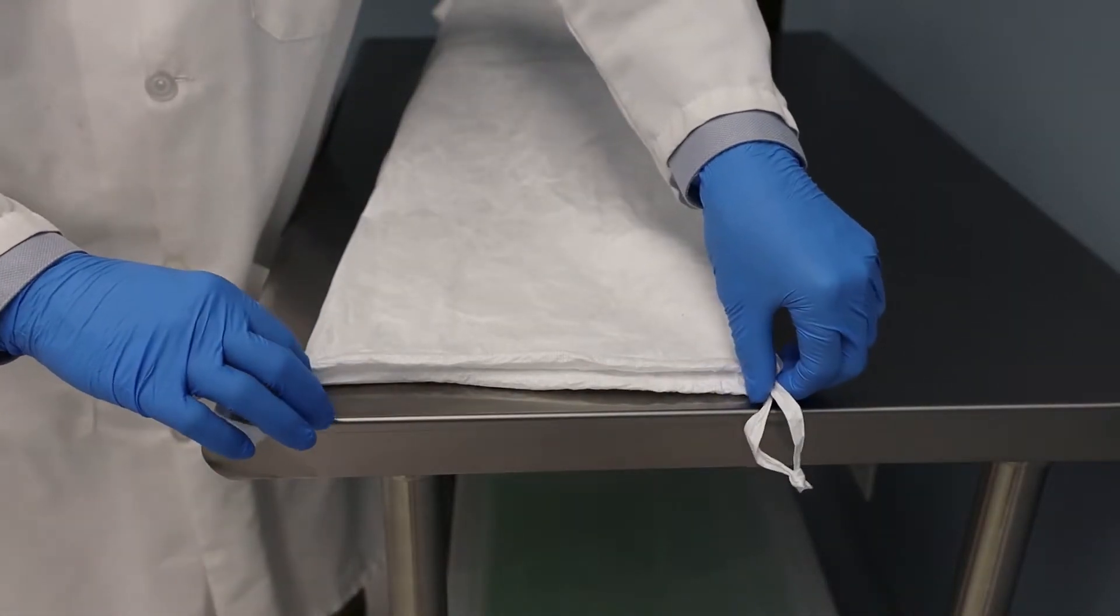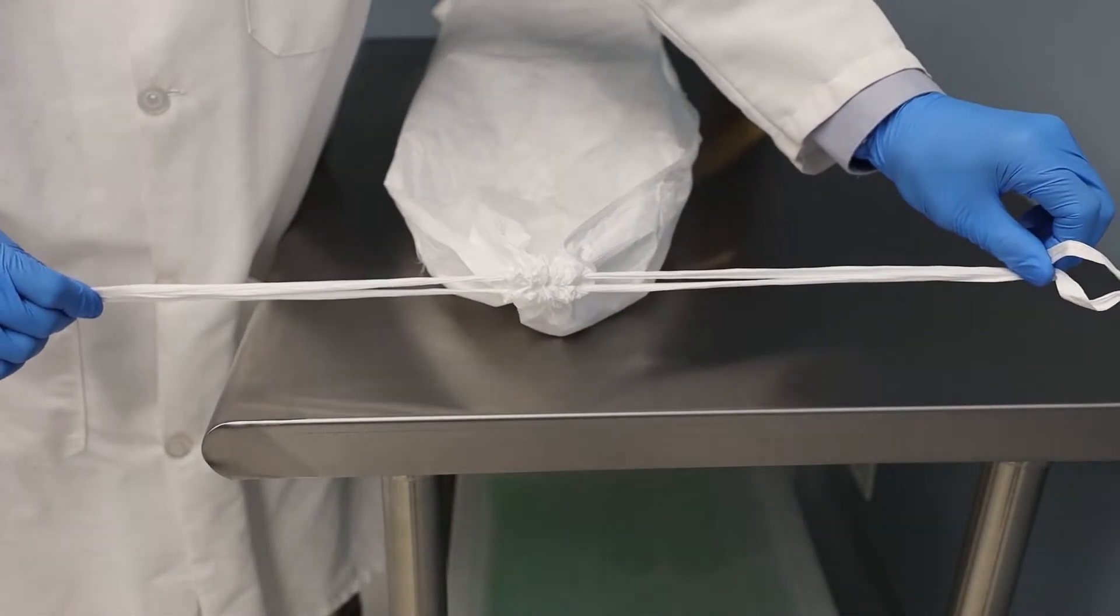To create a gooseneck closure, pull both sides of the drawstring to draw the bag opening together.